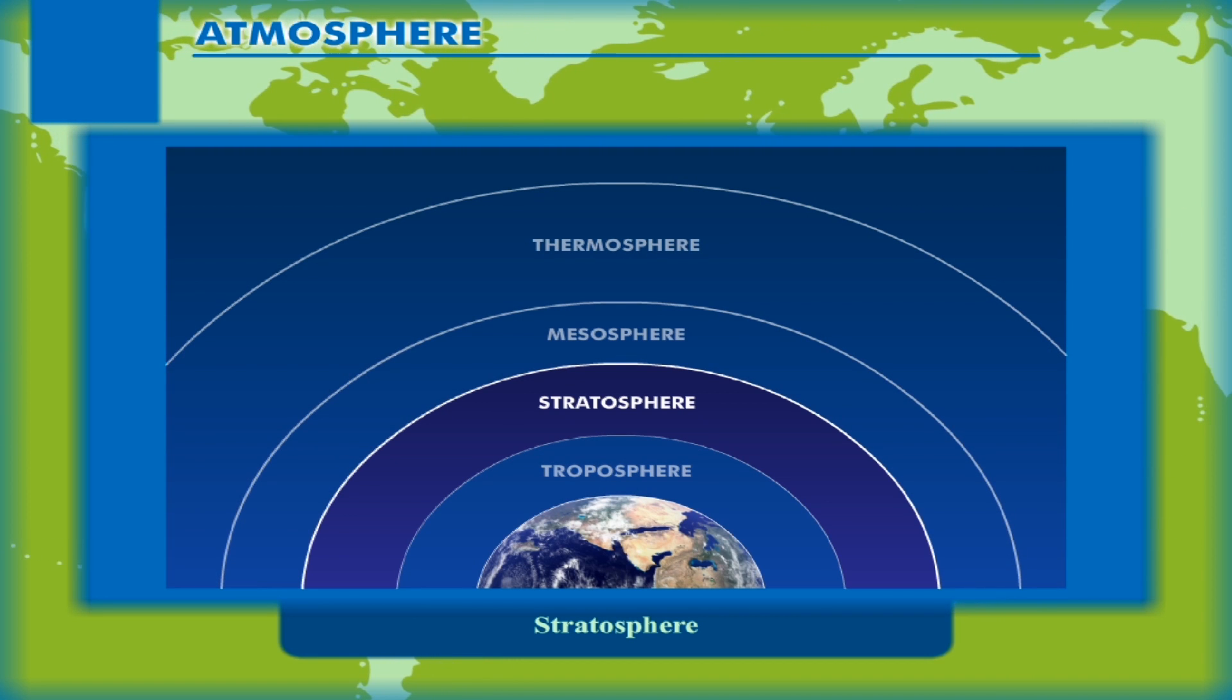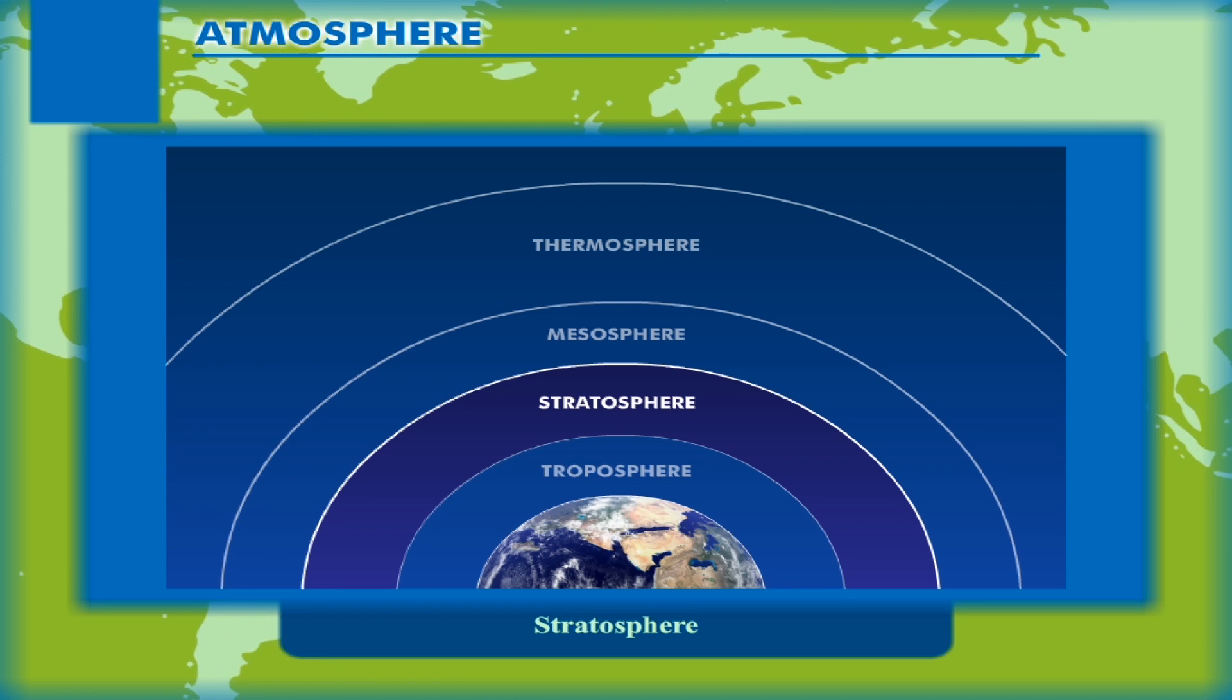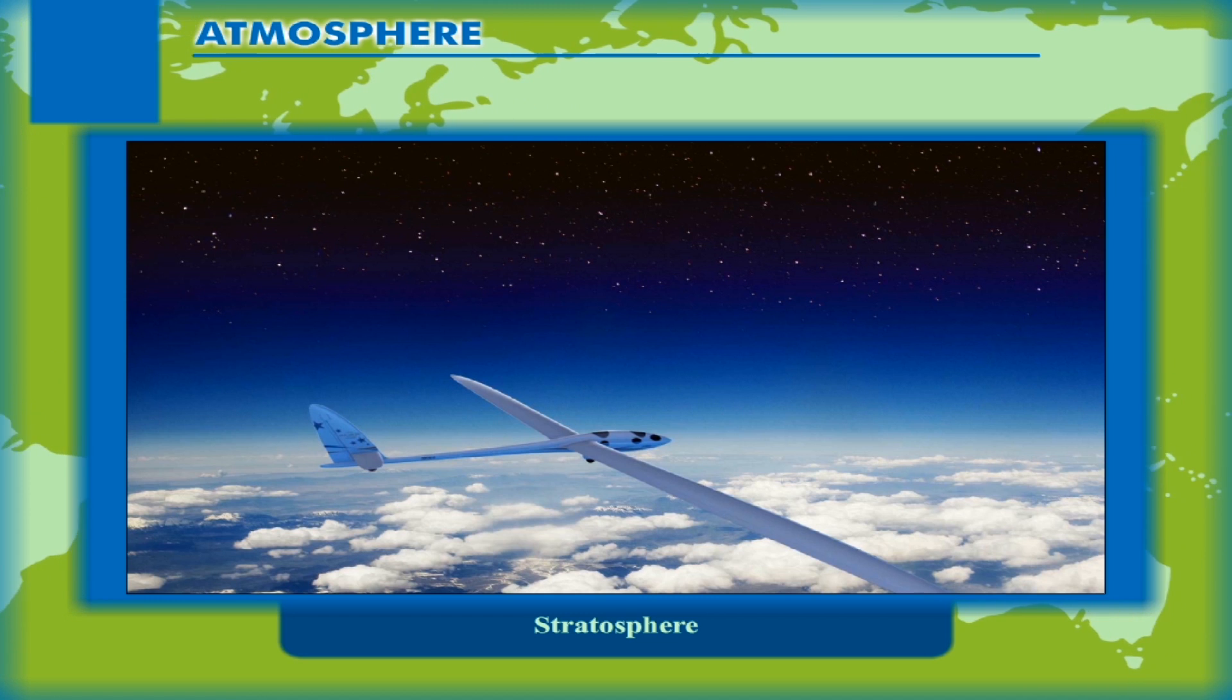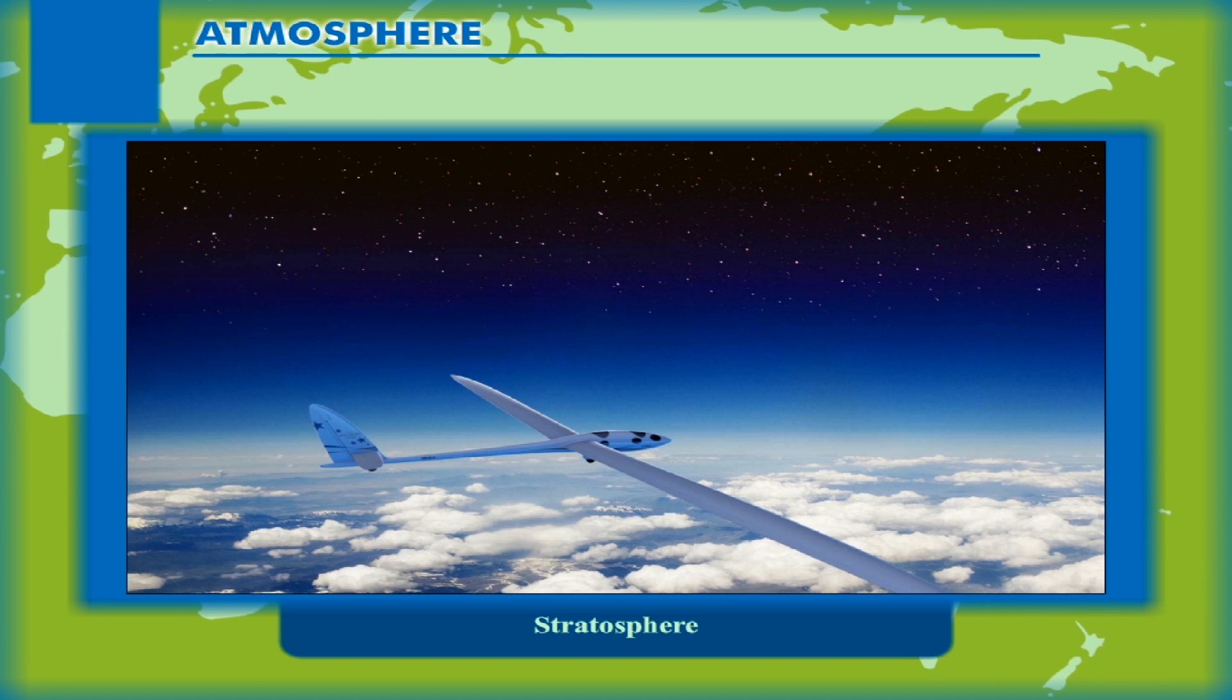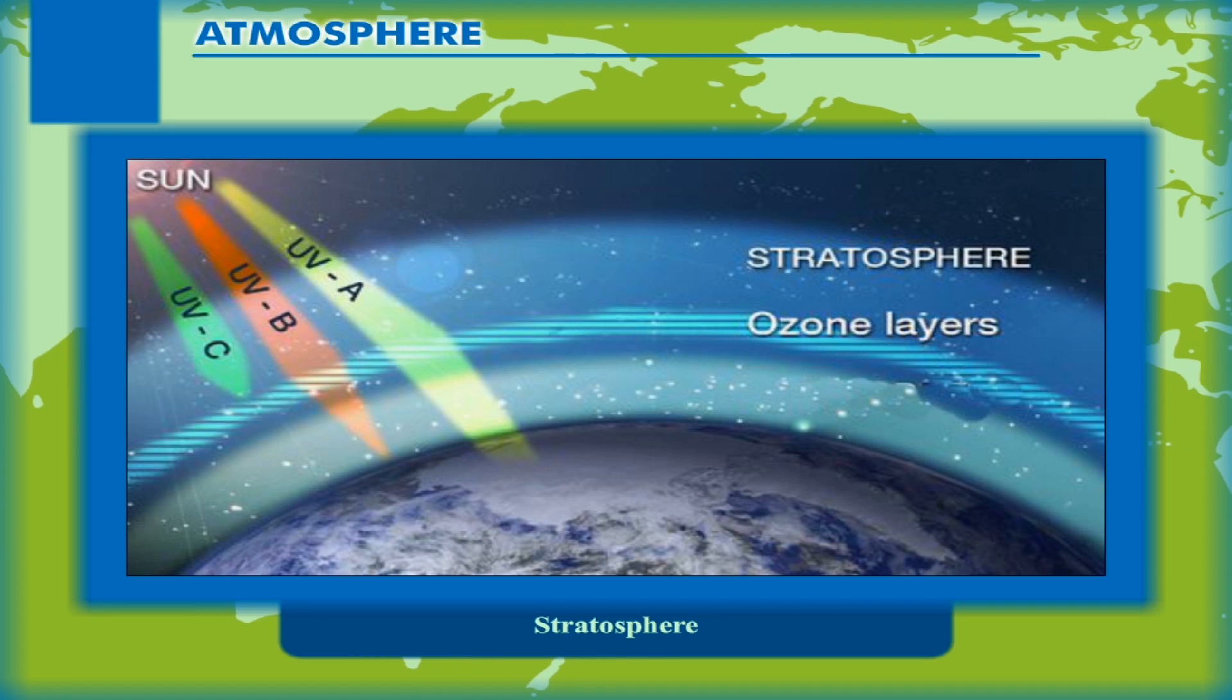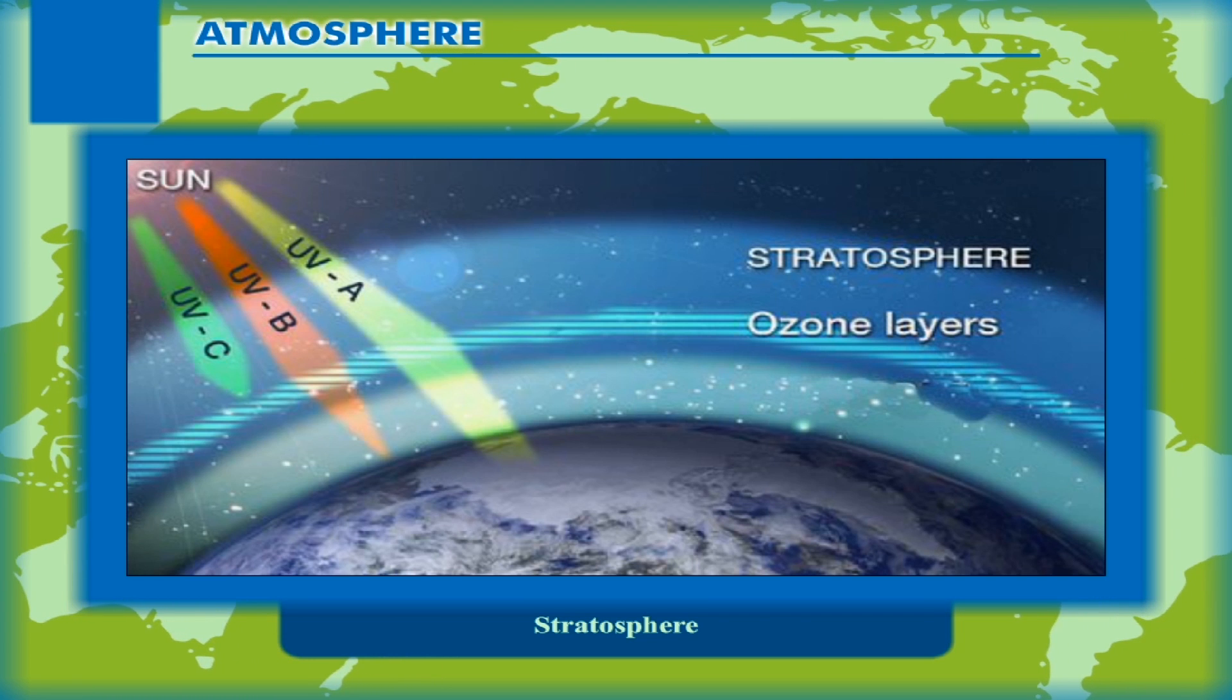Stratosphere: It lies above troposphere and extends to about 50 km above the Earth's surface. There is a gradual increase of temperature in this layer. This is the layer in which air travel is safest because there are no bumpy pockets of air. Therefore, aircrafts usually fly in this sphere. It also has a band of ozone gas which protects us from the sun's ultraviolet rays. It is called ozonosphere which is quite warm due to absorption of these rays. The upper limit of this layer is called stratopause.